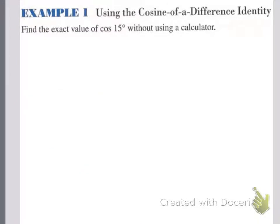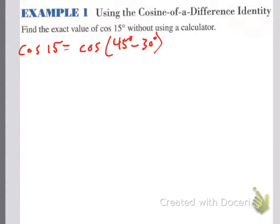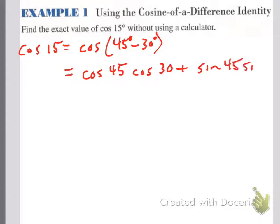Find the exact value of cosine 15 without using a calculator. We'd like to write 15 degrees as the difference of two angles whose cosine and sine we know easily. Cosine 15 is the same as cosine of 45 degrees minus 30 degrees. I have a minus inside, so when I use the formula, I have cosine 45 times cosine 30, and since it was minus inside, it's plus out here, plus sine 45 sine 30.